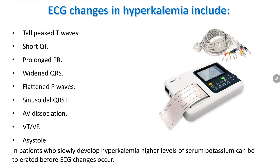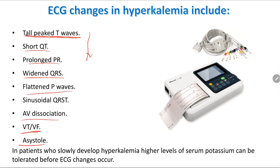The ECG features of hyperkalemia happen progressively according to severity: starting with tall peaked T waves, then short QT, prolonged PR, widened QRS, and flattened P waves. If not treated, this may progress to AV dissociation, ventricular tachycardia, and asystole.